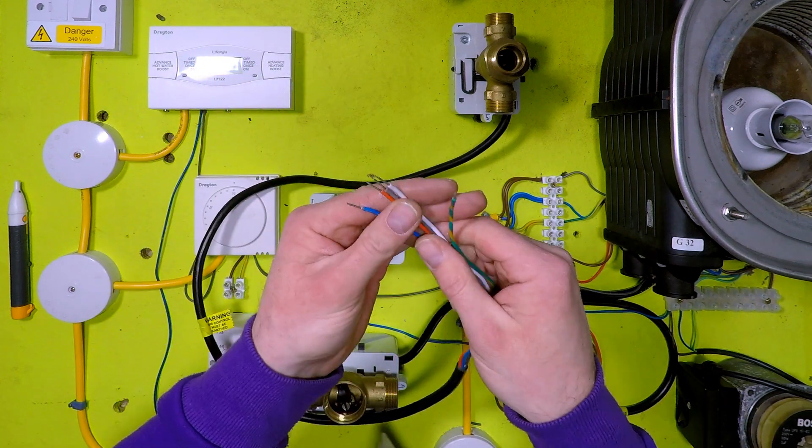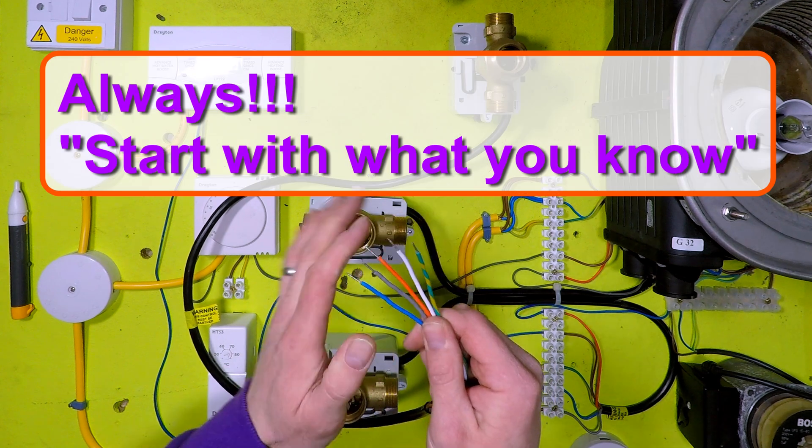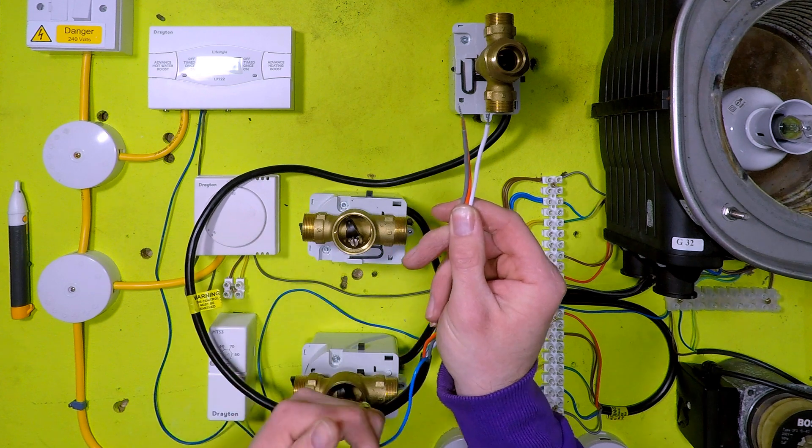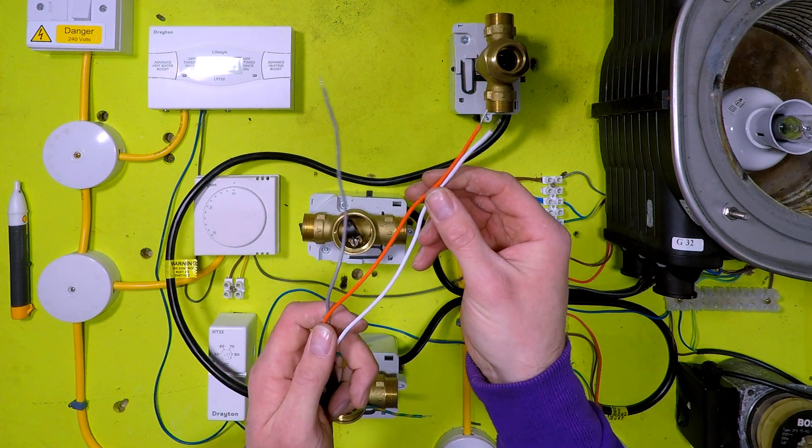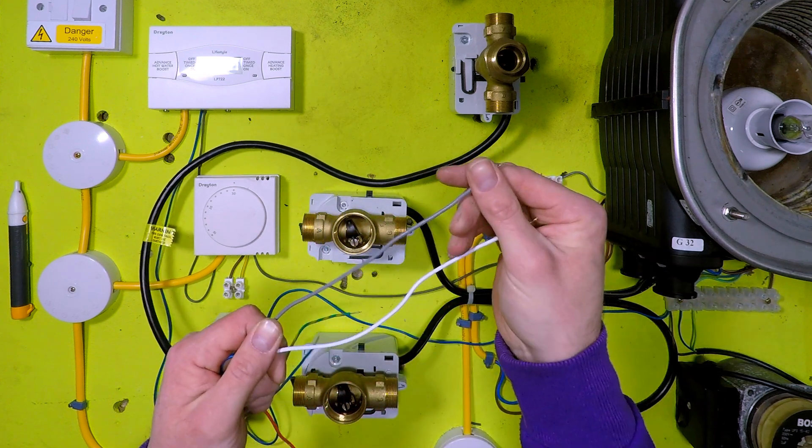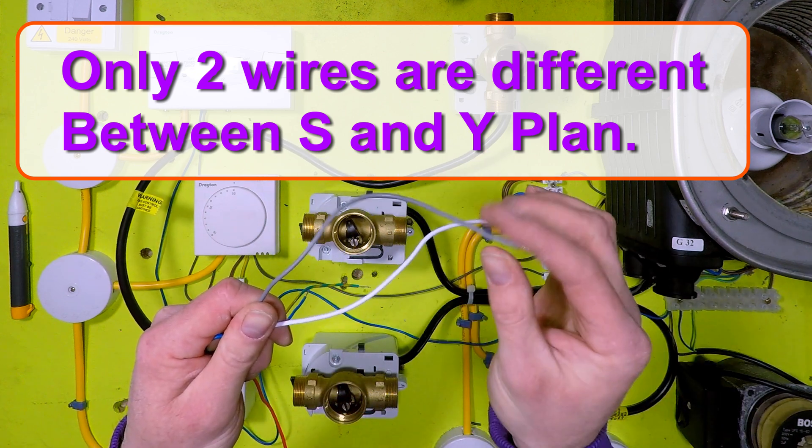Okay, so what do we have on a three port? We have five wires. Start with the things you know. Now from the S plan videos, we know earth is earth, we don't need to worry about that. We know neutral is neutral, we don't need to worry about that. And we know orange is the switch live to the boiler.